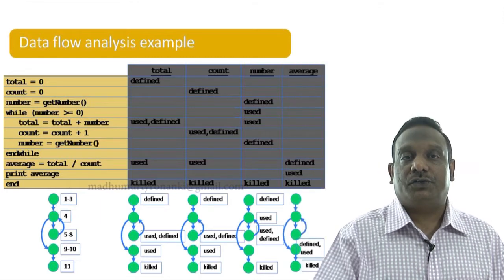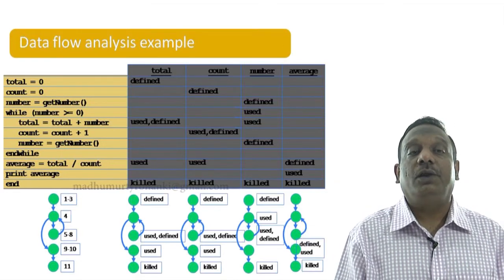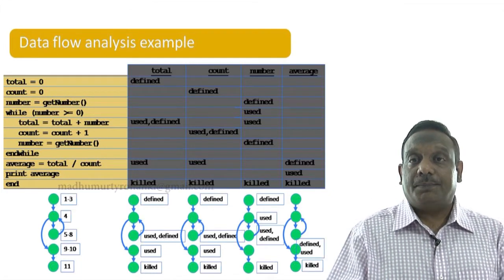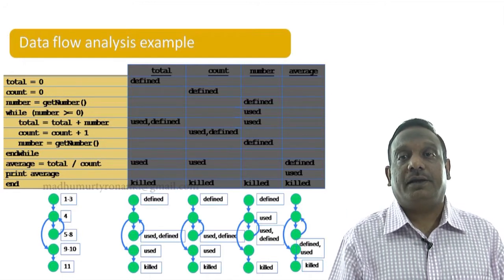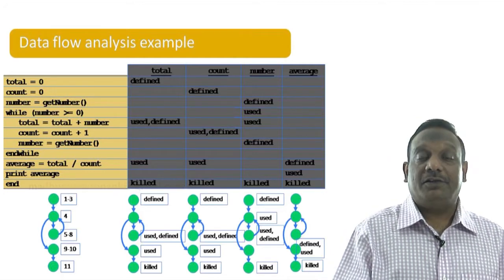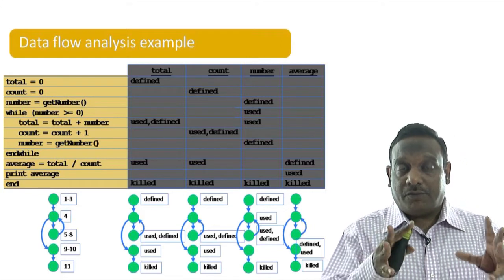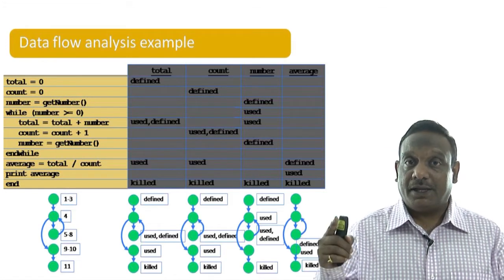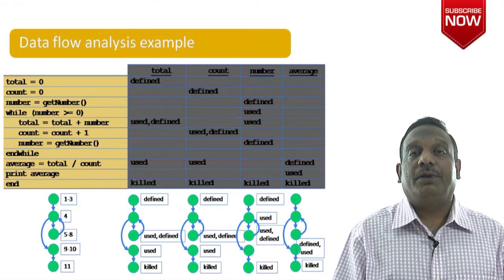Similarly for 'average': it is defined after the while loop for the first time through a calculation, then it is used in the print-average statement, and then at the end of the program it is killed. So we have carefully looked at every variable inside the program and tried to understand the life cycle of each variable.